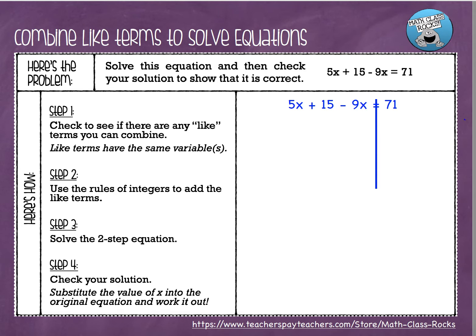Here is our first problem. It says solve this equation and then check your solution to show that it is correct. The equation is 5x plus 15 minus 9x equals 71. Before we solve the equation, I want to go through the steps real quick. Step one is we're going to check and see if there are any like terms that we can combine.